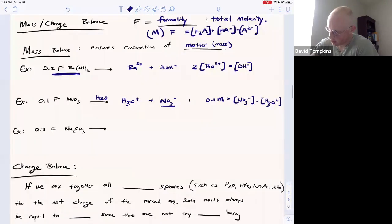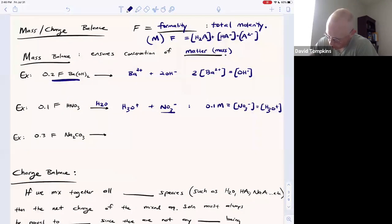Okay. Up here, there were two hydroxides for every one formula unit. So two times 0.2 molar means the total hydroxide is 0.4 molar or formal.